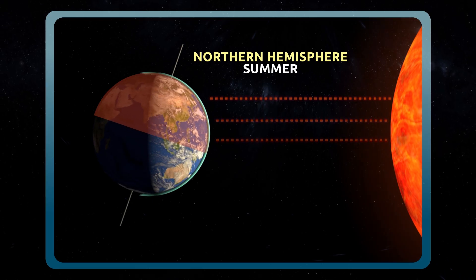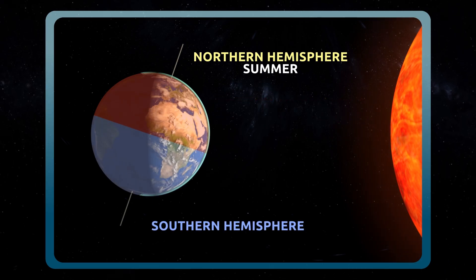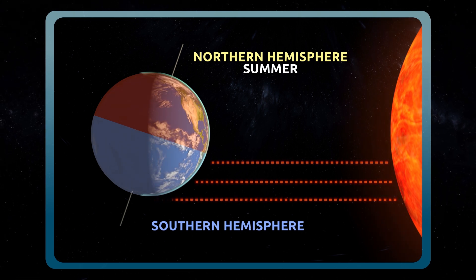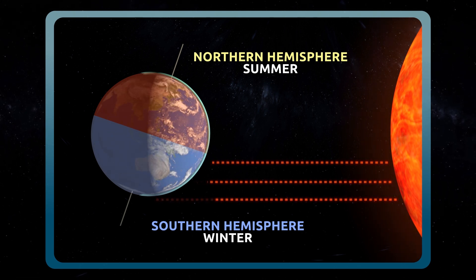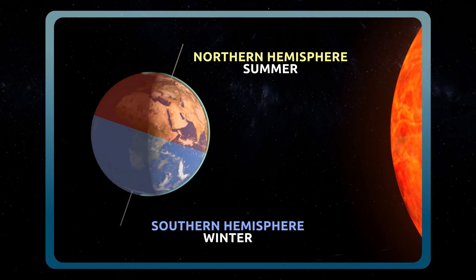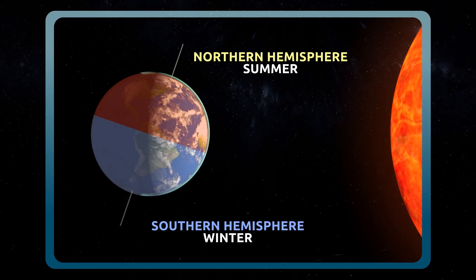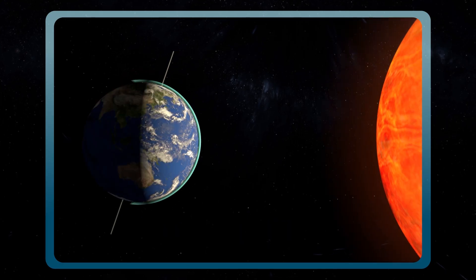By contrast, the other hemisphere is less inclined, so sunlight is less direct. That's why it's colder and it's wintertime. Here we can see that it's summertime in the northern hemisphere and wintertime in the southern hemisphere.